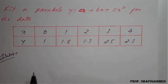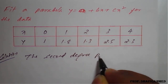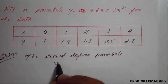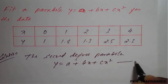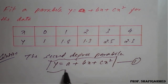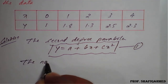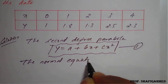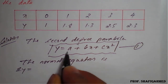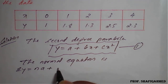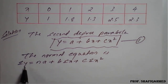They have already given the second degree parabola: y = a + bx + cx². For this equation (number 1), we will prepare the normal equations. The first normal equation is: summation y = n·a + b·summation(x) + c·summation(x²). Then multiply x to both sides.